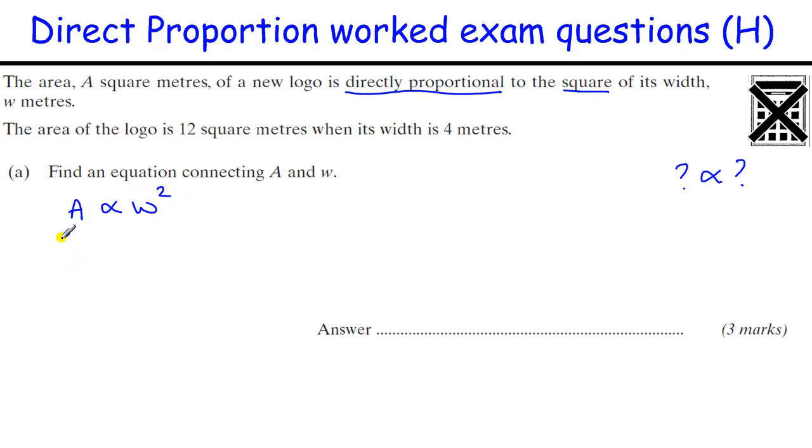That is the same as A equals K times W squared, K being a constant of proportionality. This K can be any letter, it doesn't have to be K, but that's the letter I use and most people do. Now we substitute the two values we have. The width is 4 when the area is 12, so 12 equals K times 16. To find K we need to divide by 16, so K equals 12 divided by 16.